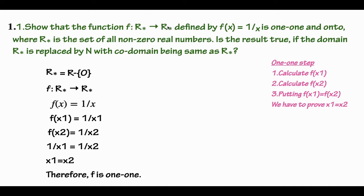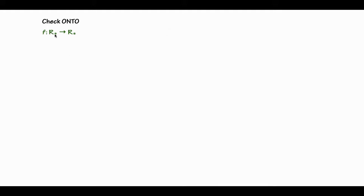Now we will check this function is onto. We will prove that this function is onto — every element in the co-domain R* has a corresponding pre-image in the domain. The function f is defined as f(x) = 1/x, from R* to R*.